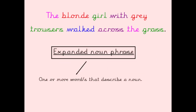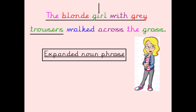Now we've identified each of the words, are you able to identify the expanded noun phrase in this sentence? Remember, an expanded noun phrase is one or more words that describe a noun. Which noun do you think is being described and which part of this sentence is describing that noun? The girl is the noun that is being described, so the noun phrase is 'the blonde girl with grey trousers.' That's because 'grey trousers' is still describing the girl — it's what she's wearing. So keep in mind, an expanded noun phrase is describing the one noun with more than one word.